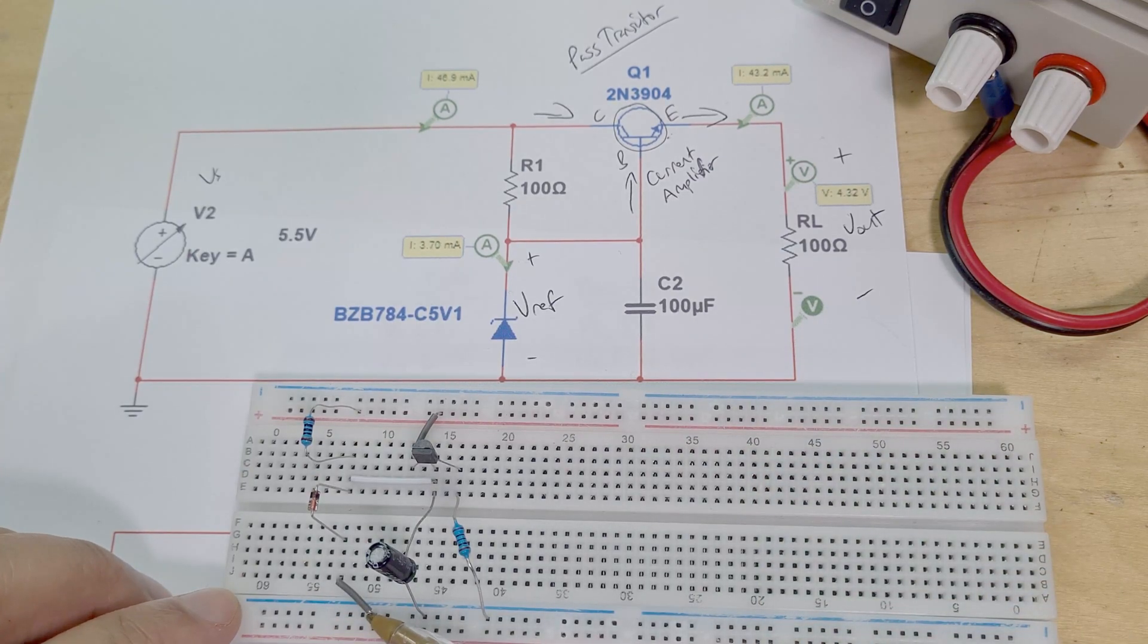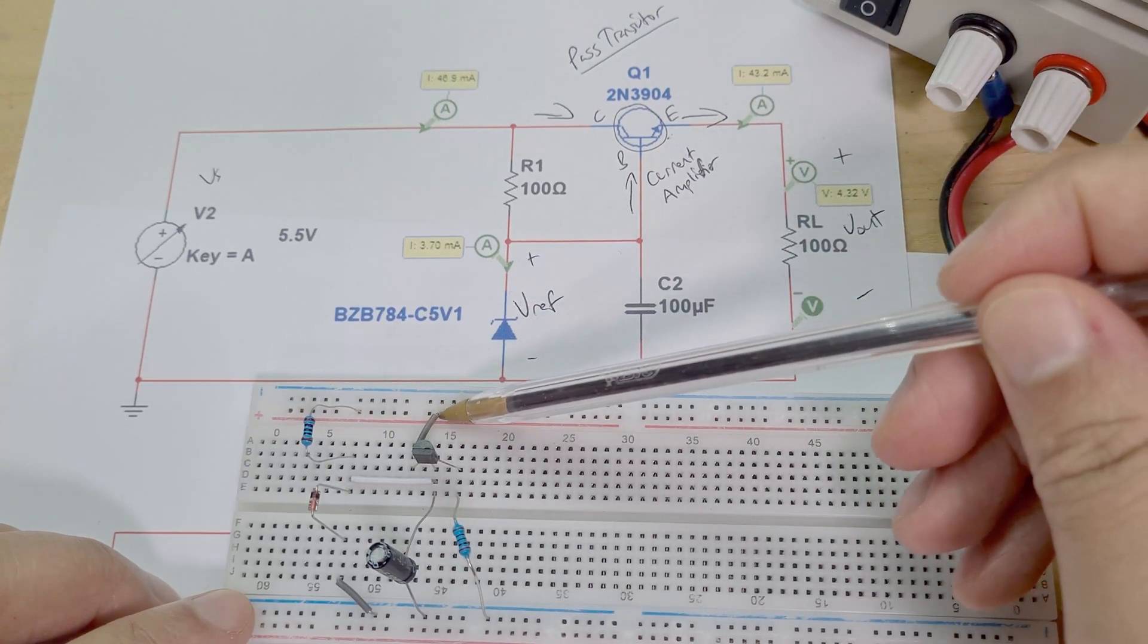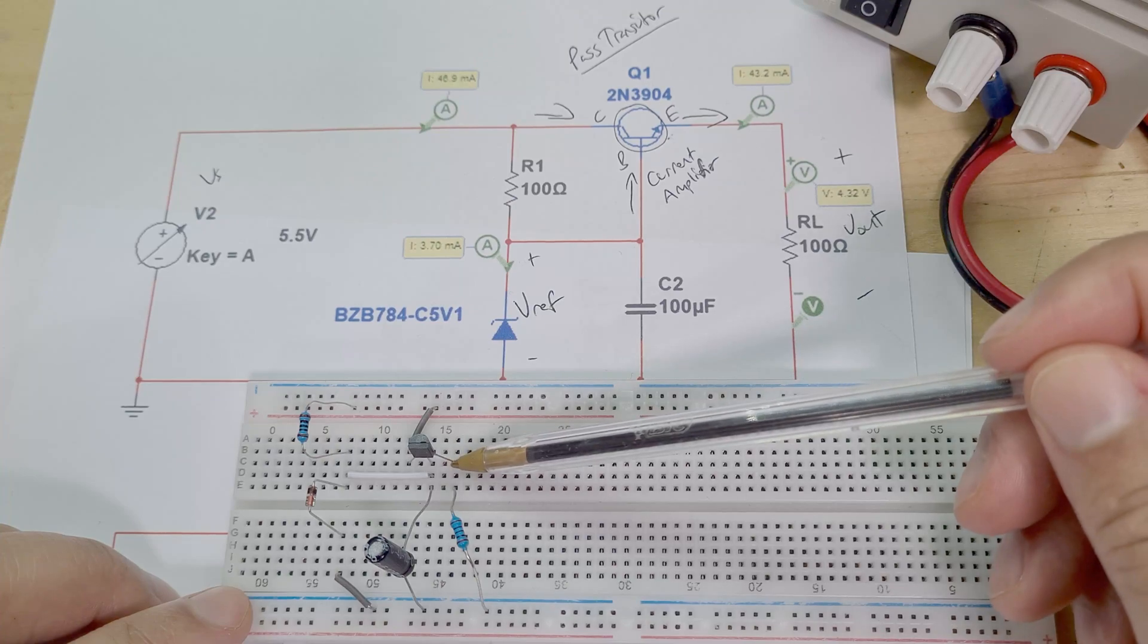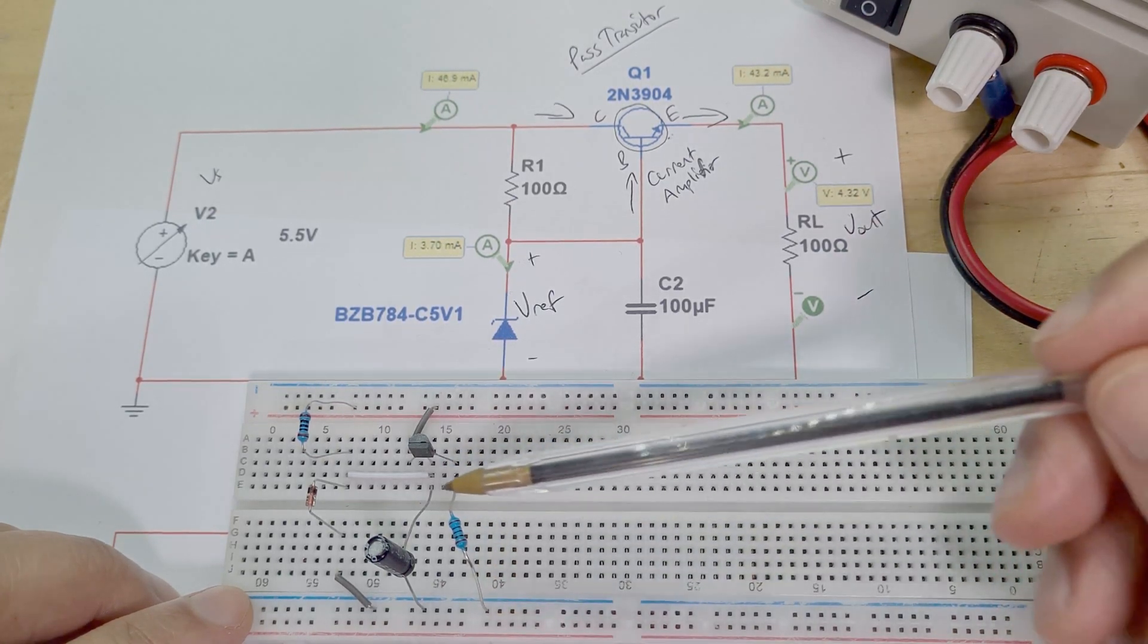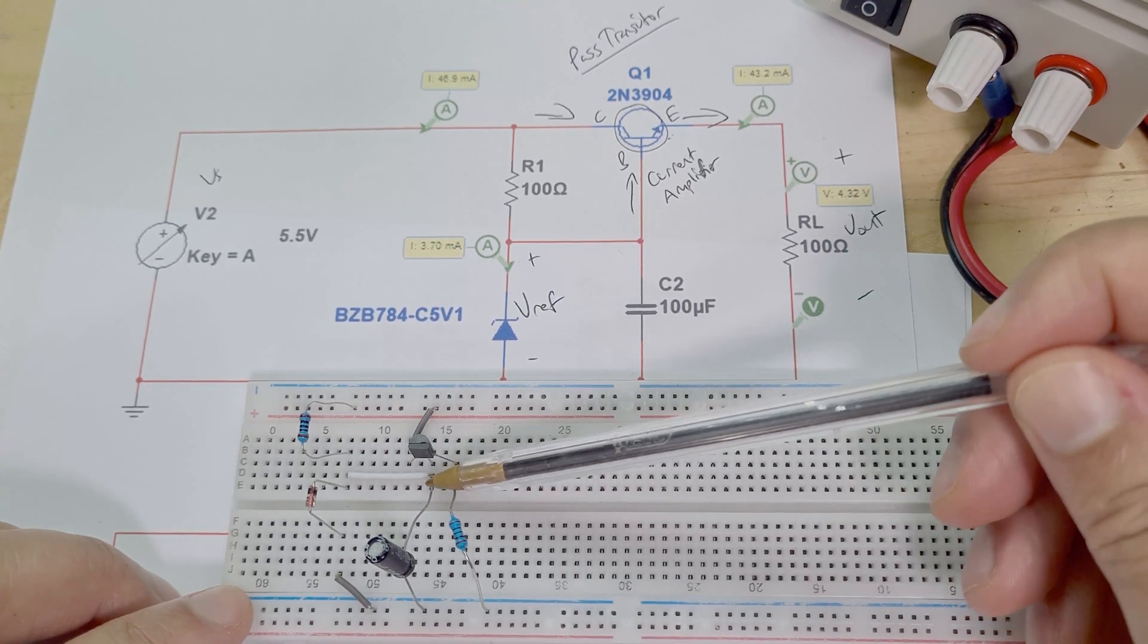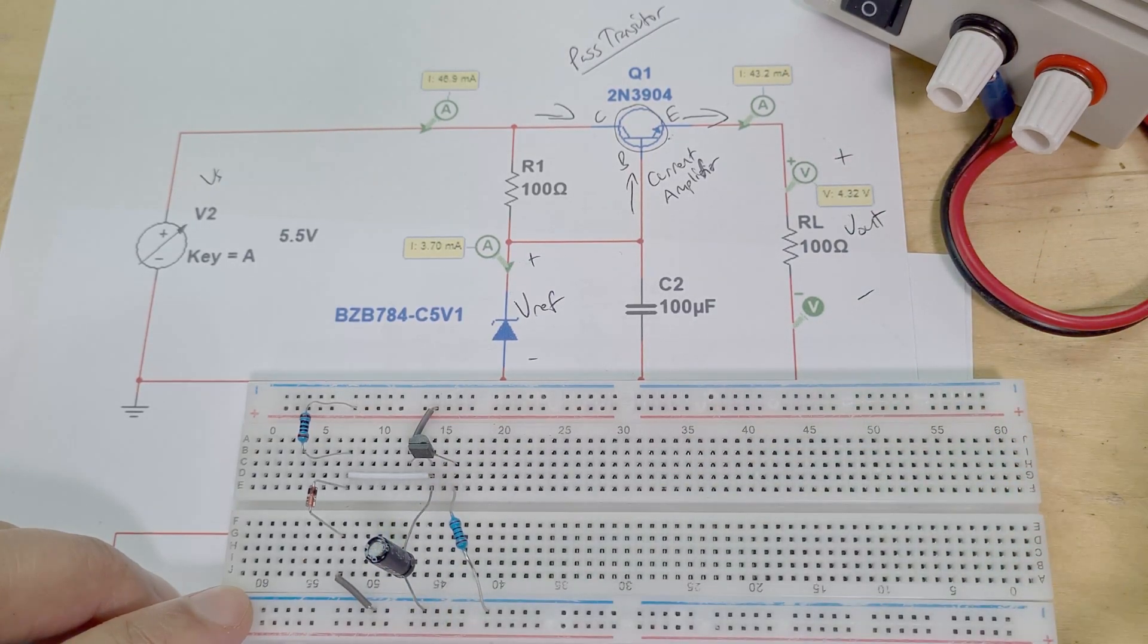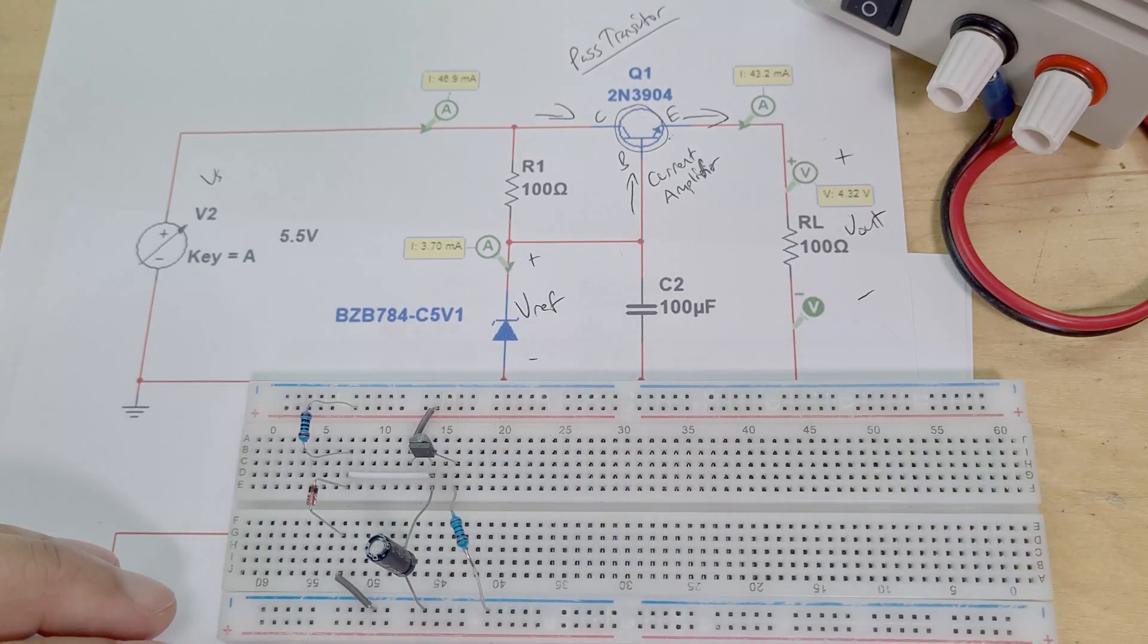Okay, this Zener going through to ground, 5.1 volt Zener. Then from the base of transistor I've got the collector being connected to the positive supply rail up here, and then I've got the emitter going through to the load resistor which goes through to ground. And then also at the base of the transistor I've got 100 microfarad capacitor which goes through to ground. It's such a simple circuit and it works so well.